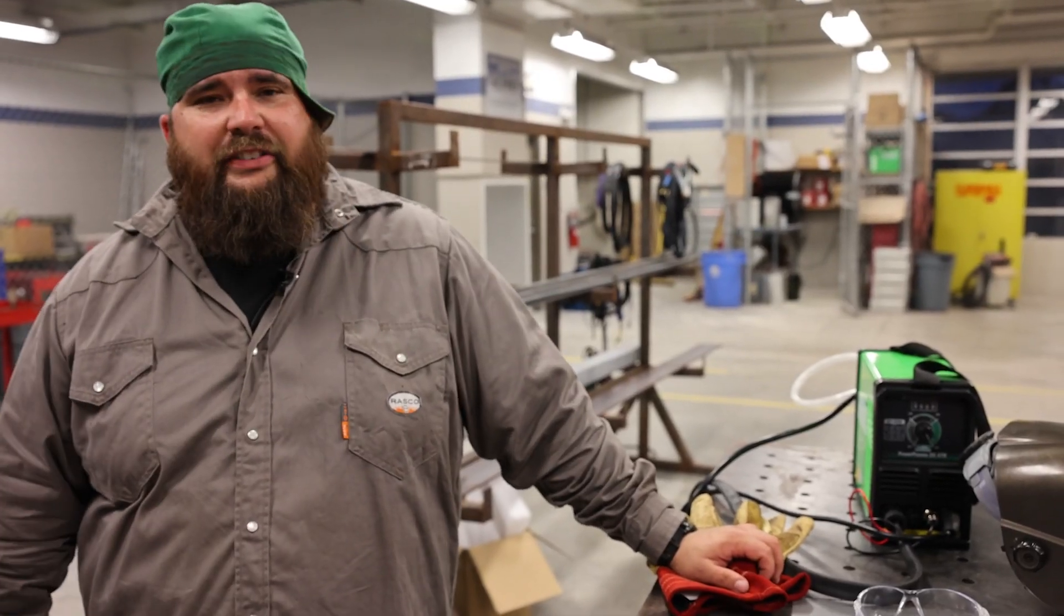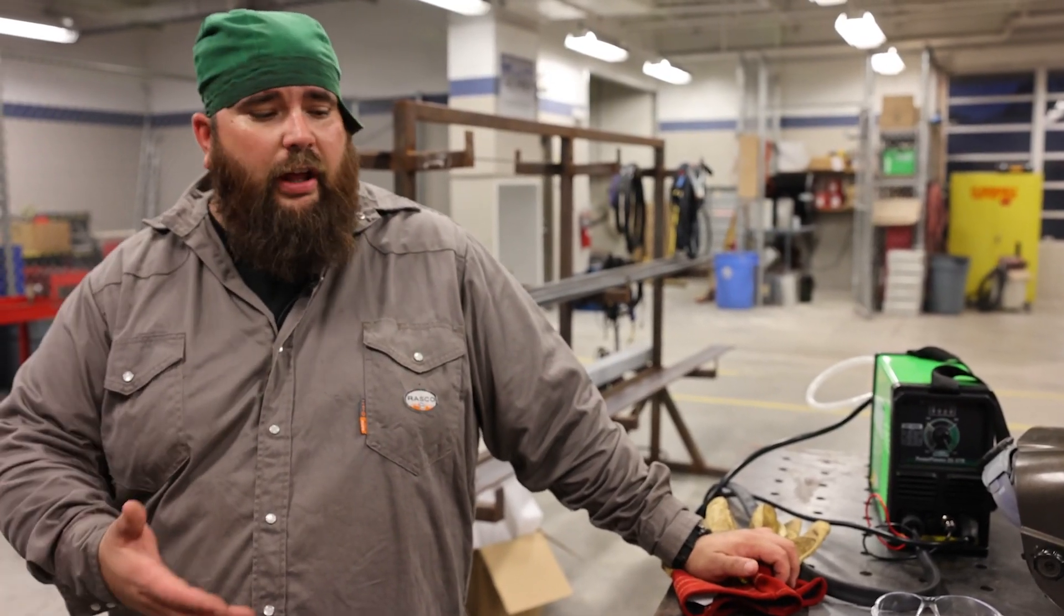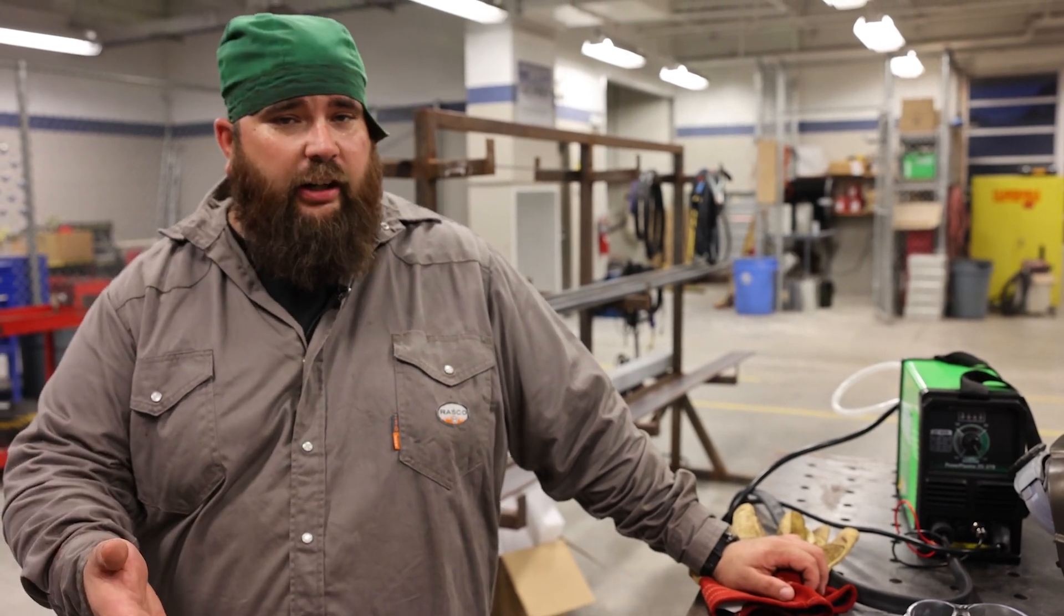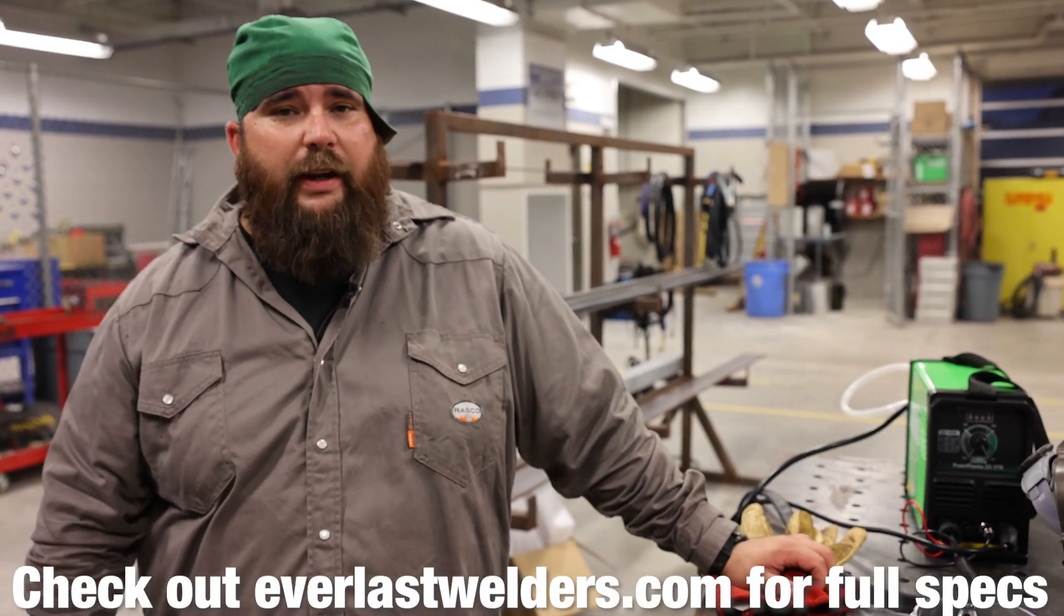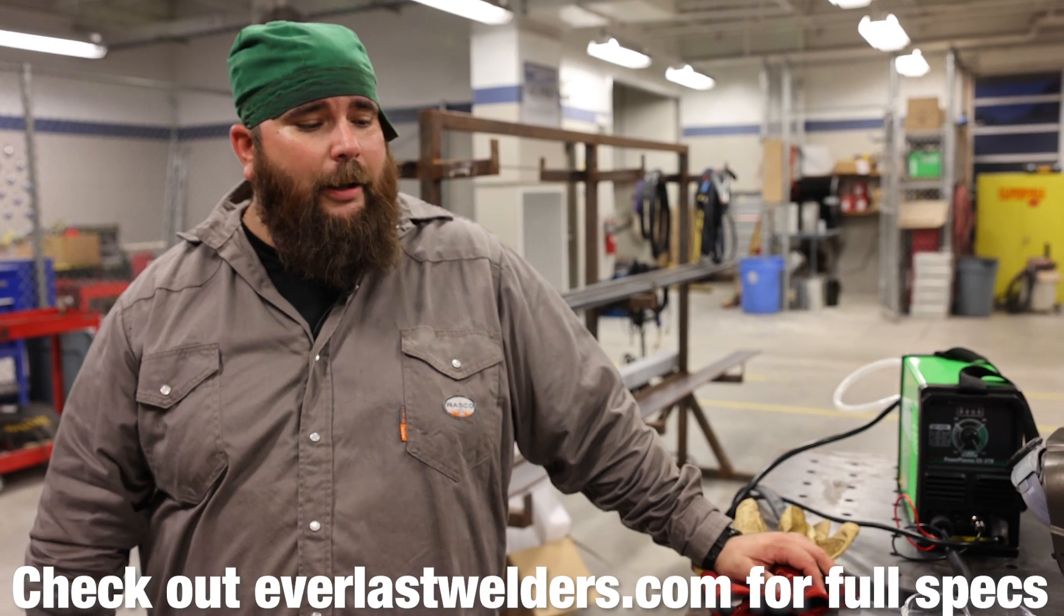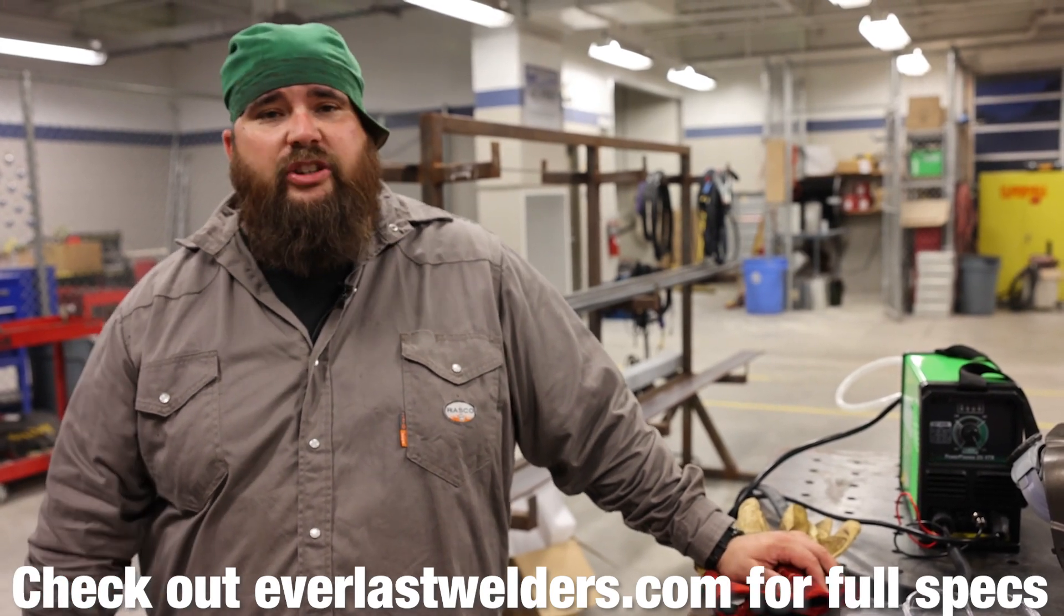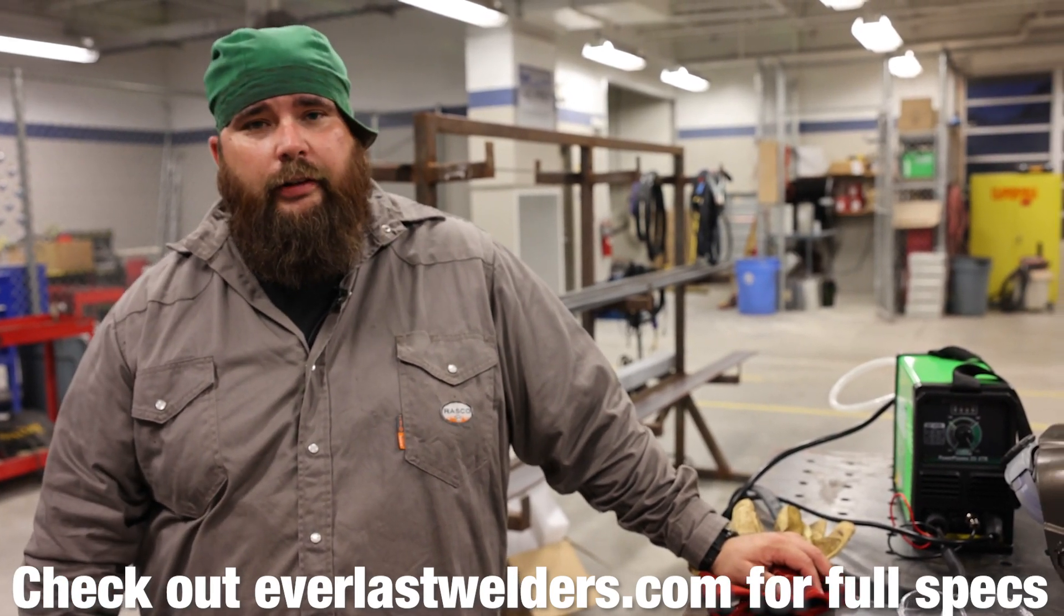Alright guys, three materials. Aluminum, stainless steel, and carbon steel. It will do thinner and thicker of each of the materials. That's just what we have on hand here. But that's a good representation of what this can do every day for you. This is the Power Plasma 25i.